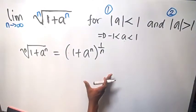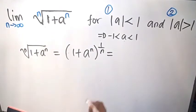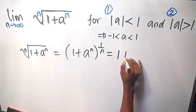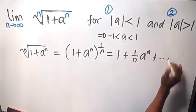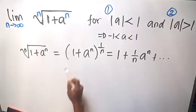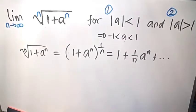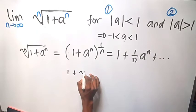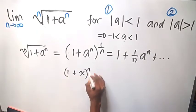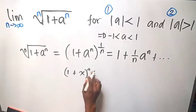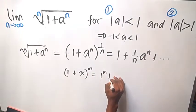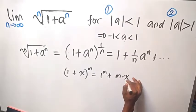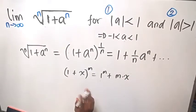If we go ahead and expand this using binomial expansion, we're going to get the first two terms: this is 1, plus we bring the power down — 1 over n — times a raised to the power of n, plus and so on. When we usually have 1 plus x raised to the power of m, we normally get 1 raised to the power of m plus m times x raised to the power of 1. That is the pattern we are applying here, and since this is a fraction, we are going to continue infinitely.